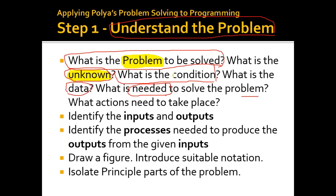We need to fully understand what is the condition — the main condition in the problem — because in any problem we have many limitations. What is the data needed? This data is needed to convert an unknown into a known for the problem. When we fully understand all the knowns, we determine what is needed to solve the problem and what actions need to take place.